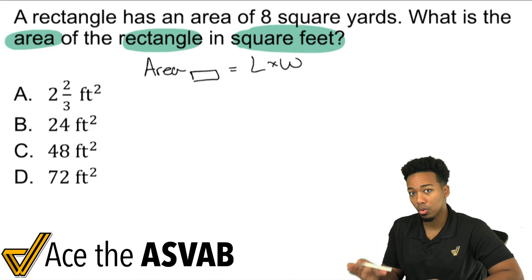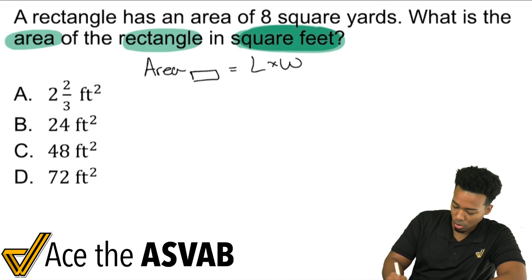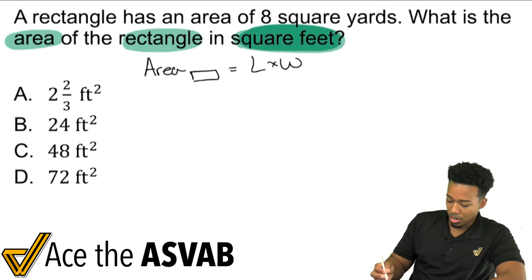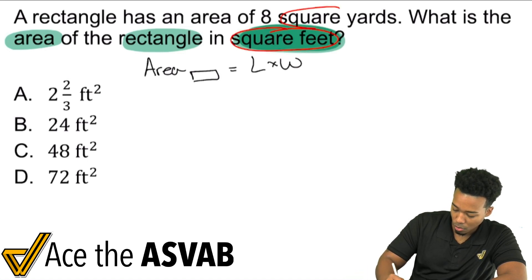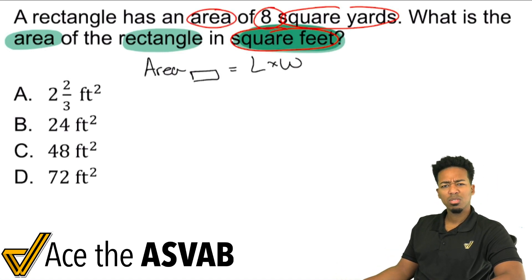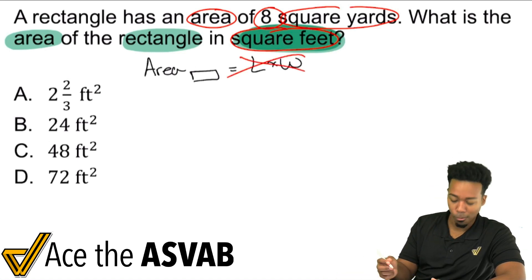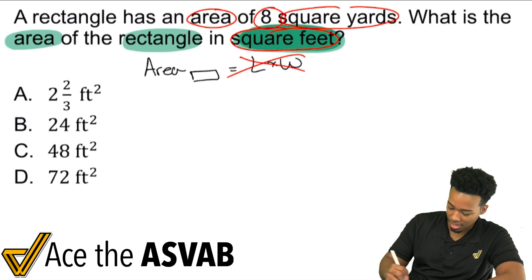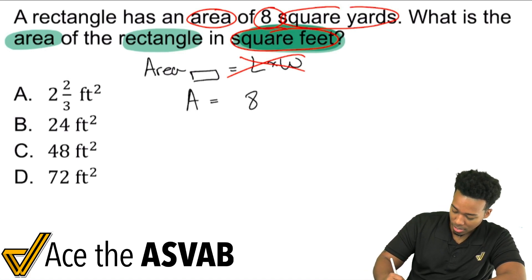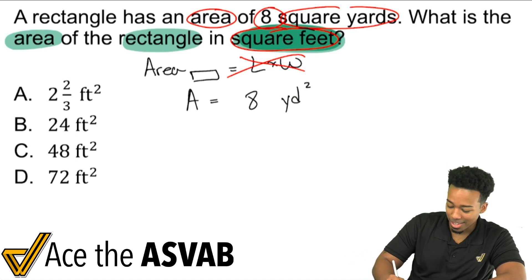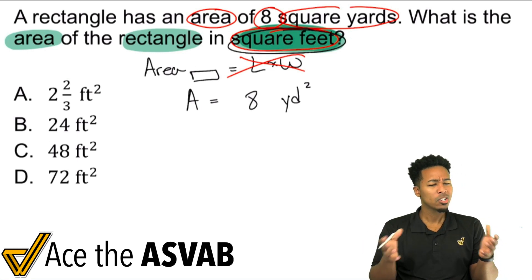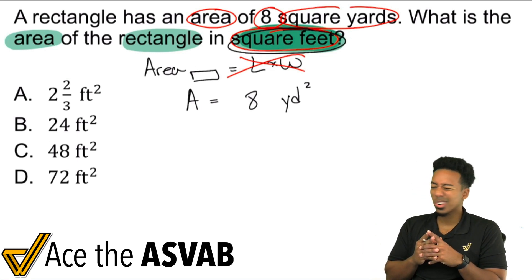But first, we also need to recognize that it says square feet. Why is that important? Because this says square yards, and we're already given the area as eight square yards. So we already have the area — we don't even need the formula. The area we're given is eight square yards, and we need that area in square feet, not square yards. How do we do this?